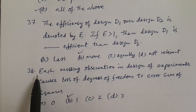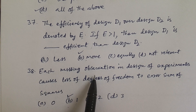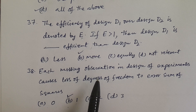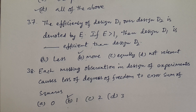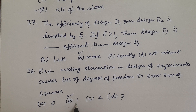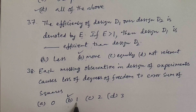For each missing observation, one degree of freedom is lost from the error sum of squares. For example, if there are two missing observations, then two degrees of freedom are lost — one for each. For every missing observation, we lose one degree of freedom. Keep this in mind. Answer is B: one.